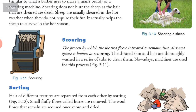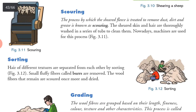The second step is scouring. The process by which the sheared fleece is treated to remove dust, dirt and grease is known as scouring. The sheared skin and hair are thoroughly washed in a series of tubs to clean them. Nowadays machines are used for this process. Sorting: hair of different textures are separated from each other by sorting. Small fluffy fibers called burrs are removed. The wool fibers that remain are scoured once more and dried.